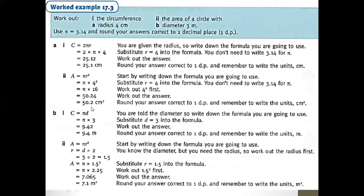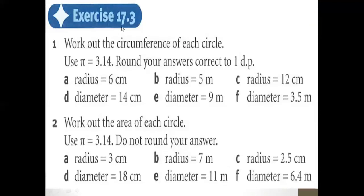For the second case, we are given a diameter of 3. Since D equals 2R, and we have the diameter, we use C equals pi times D directly. So 3 multiplied by pi gives us 9.42 for circumference. For the area, since we have D and not R, we find R first: R equals D divided by 2, so R equals 1.5. Then 1.5 squared is 2.25, and 2.25 multiplied by 3.14 gives approximately 7.1 meters squared.